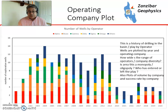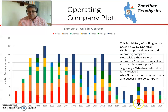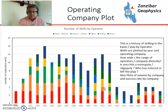This is a plot showing different types of operators. In this particular fictional basin we had Alpha, Bravo, Gamma, Delta, Sigma, and Omega as the main operators, and this is where they came in. Alpha initially started and was very successful, then Bravo came in, then others came in. You can also do plots showing volume discovered by company, how individual companies have individual success rates, how many wells individual companies drill and when, and you can see what the operator diversity of the basin has been through time.